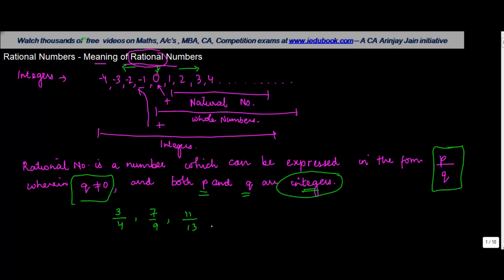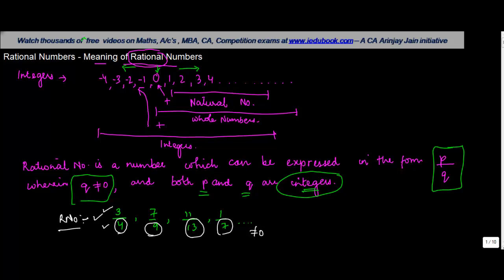For example, negative 1 upon 13, 1 upon 7, and so on. As long as Q, which is the denominator, is not equal to 0 and both P and Q are integers, these will be rational numbers.